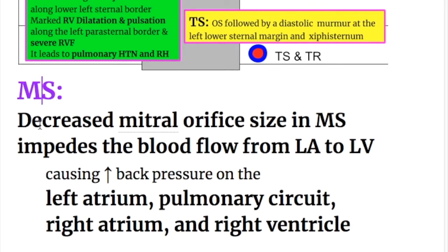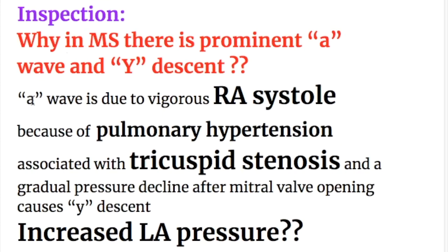In mitral stenosis, decreased mitral orifice size impedes blood flow from the left atrium to the left ventricle, because the mitral valve is the communication between the left atrium and the left ventricle. This causes increased back pressure on the left atrium first, then the pulmonary circuit, right atrium, and right ventricle. On inspection, there is an enlarged or prominent A wave and a wide Y descent. The A wave is due to vigorous right atrial contraction because of back pressure from the left atrium to the pulmonary circuit and to the right atrium.